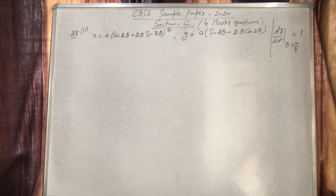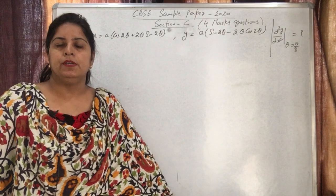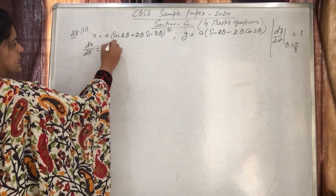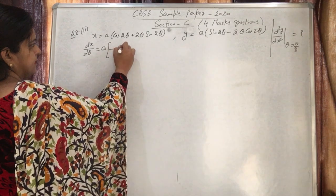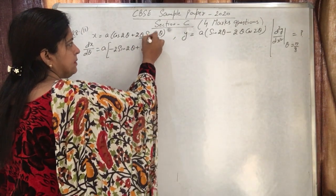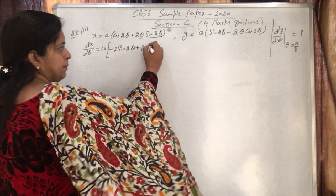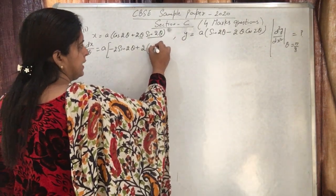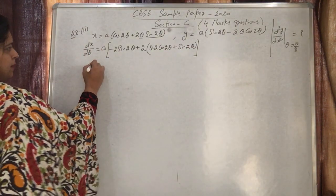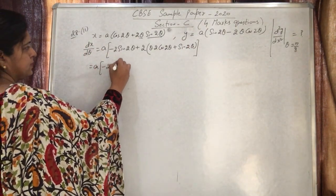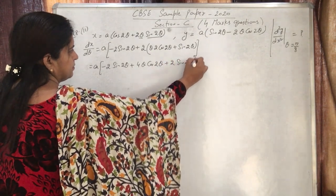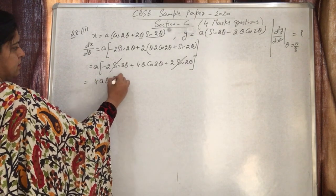Since x and y are parametric in θ, we first find dx/dθ and dy/dθ. For dx/dθ: differentiating a(cos2θ + 2θsin2θ) — using chain rule on cos2θ gives -sin2θ·2, and using product rule on 2θsin2θ gives 2sin2θ + 4θcos2θ. After simplification, the -2asin2θ and +2asin2θ cancel, leaving dx/dθ = 4aθcos2θ.